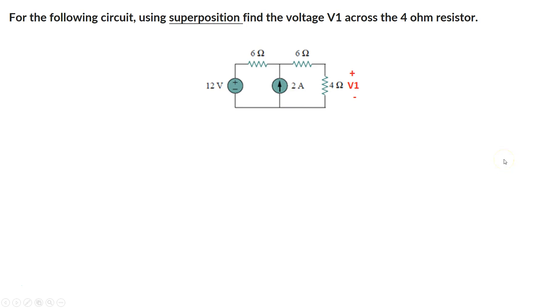In order to do this, we'll basically create two circuits: one where we evaluate the influence of the current source, and one where we evaluate just the influence of the voltage source.